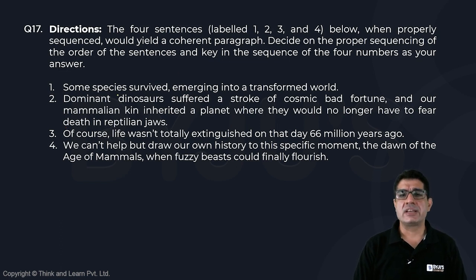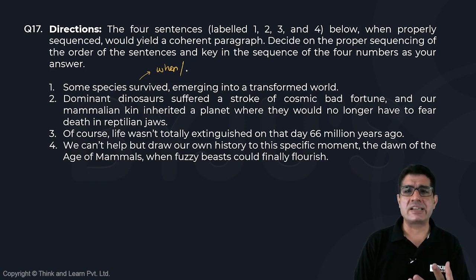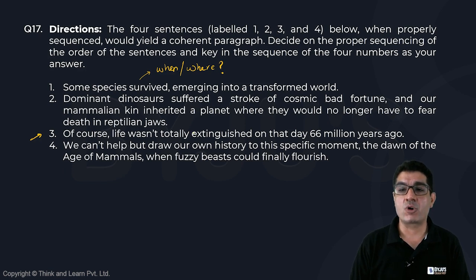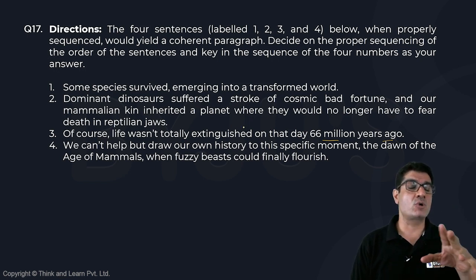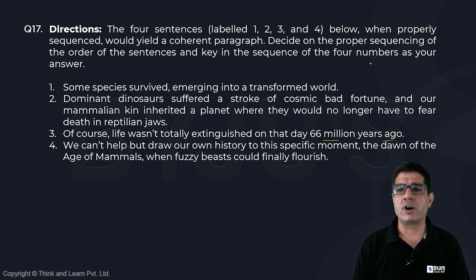Look at the idea in sentence one: 'Some species survived emerging into a transformed world.' When you say 'some species survived,' you need some kind of context that answers when or where. That context is given by sentence three: 'Life was not totally extinguished on that day 66 million years ago — some species survived.' Not totally extinguished, some species survived — they are basically the same idea, so three and one need to come together.